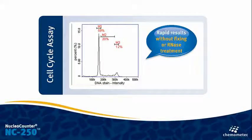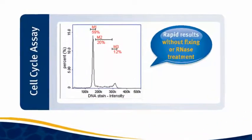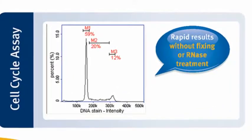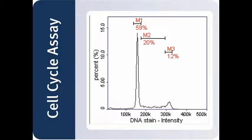In addition, the Nuclear Counter NC250 provides fast and easy assaying of cell cycle profiles with world-class precision. All you need to do is incubate your cells for 5 minutes with a mixture of lysis buffer and staining solution, followed by the addition of neutralization buffer, then load a slide and press run. The results show a histogram of the DNA stain intensity, and the G1, G0, S, and G2M phase populations can be measured by placing markers on the histogram.